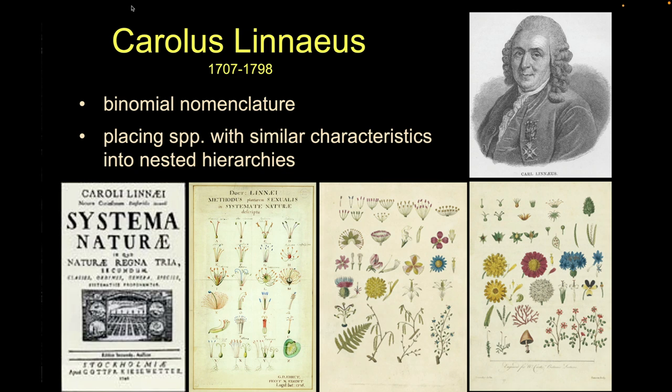We jump forward to Carl Linnaeus — a guy who so liked his system he changed his name to Carolus Linnaeus. He gives us the idea of binomial nomenclature: the genus and species. Every unique species has a genus capitalized and species lowercase name. He created this idea of placing species with similar characteristics into a nested hierarchy — his famous Systema Naturae — grouping grasses together, trees together, placing things into hierarchical groups.